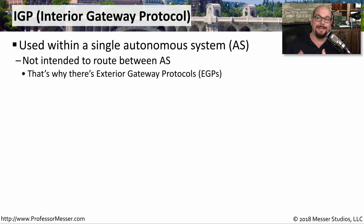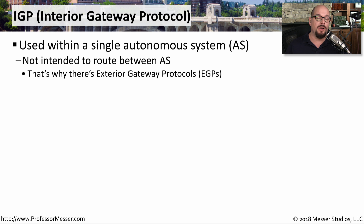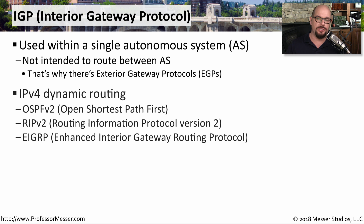An IGP is an interior gateway protocol. It's a routing protocol that we would use to route between networks that are on our internal autonomous system. We would not use these routing protocols to route to autonomous systems that are outside of our control. We'll talk about external gateway protocols in just a moment.